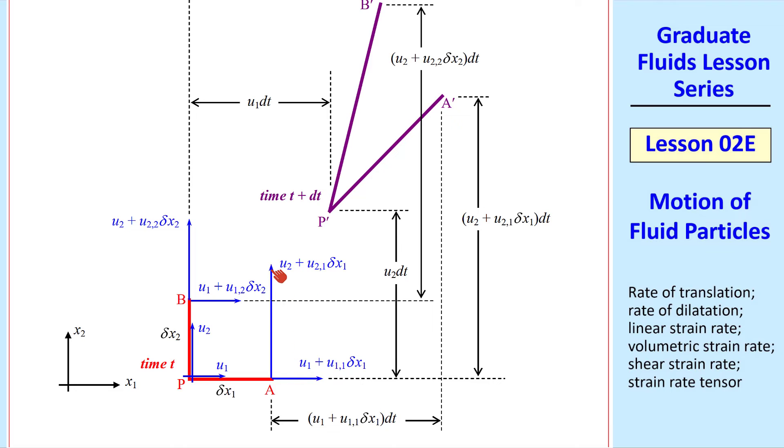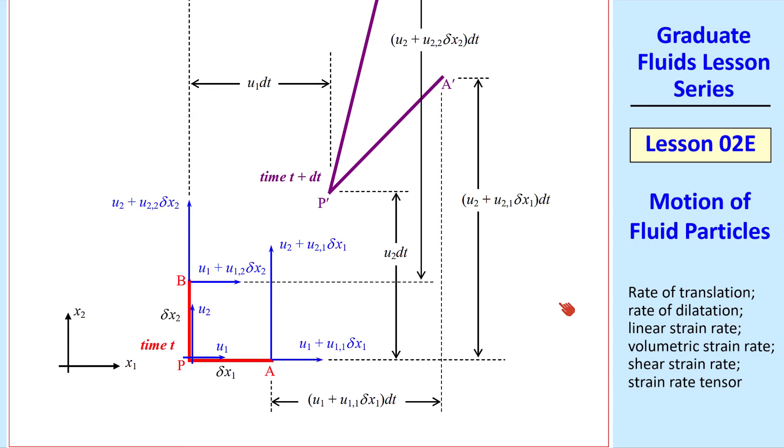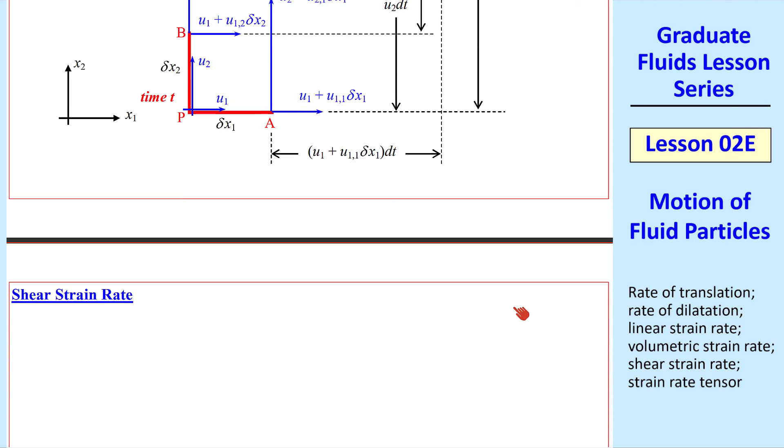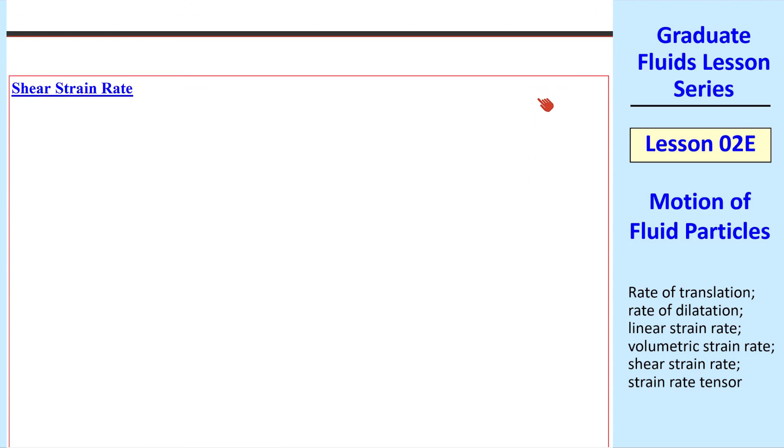If you don't get this right away, study this diagram carefully. For example, this is the speed of point A upward. So point A moves upward by a distance of that speed that we have here times dt. We'll use this diagram to define the next rate of motion, which is shear strain rate.